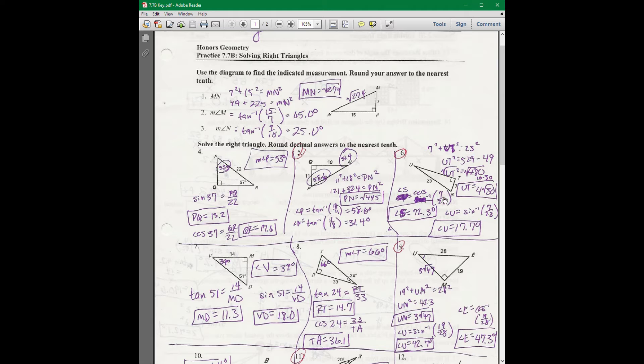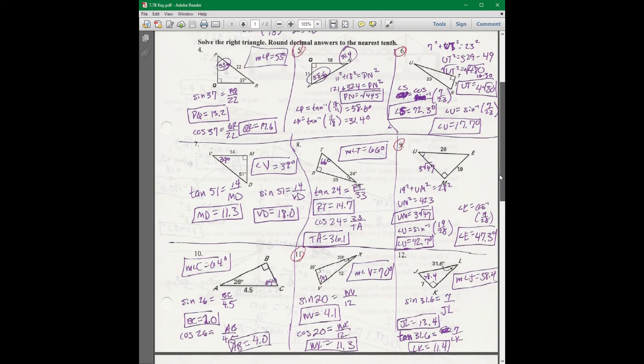And then for U, opposite over hypotenuse is sine, so inverse sine of 7 over 23 gives you 17.7.